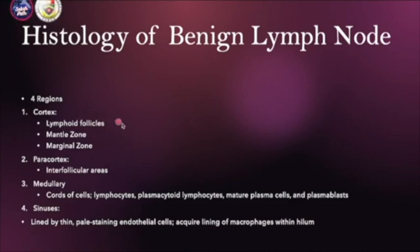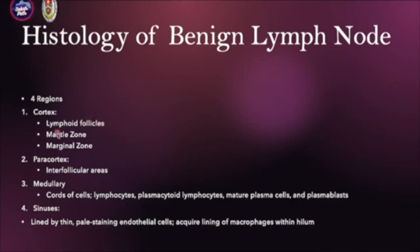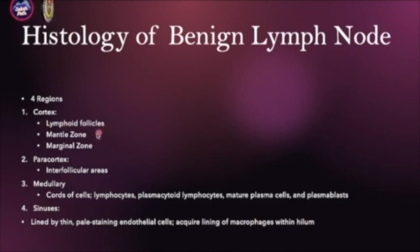Why these four regions are important is because each pathology may affect and may arise from these four regions differently. For example, B-cell lymphoma usually can arise in the cortex region. If the lymphoma originates from the germinal center side — for example, diffuse large B-cell lymphoma — it usually arises in the germinal center, which I will describe later.